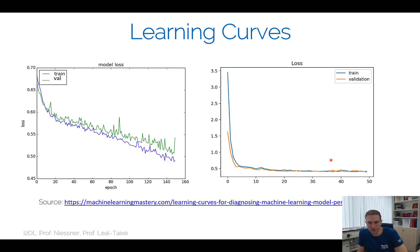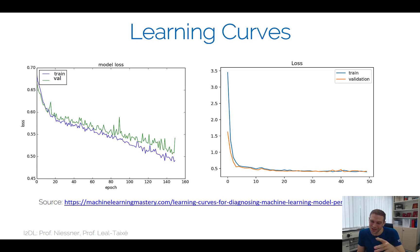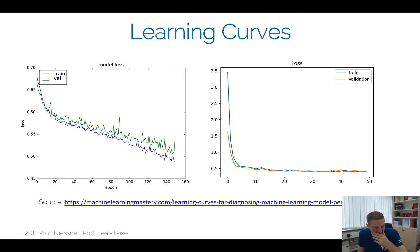If the loss drops to a plateau before you even reach one epoch, something is often fishy — either the learning rate was too big, or your data is inconsistent and you're just getting some mean output.